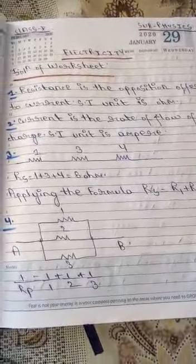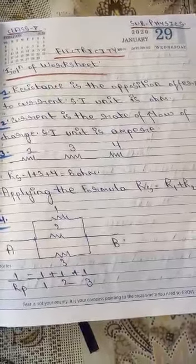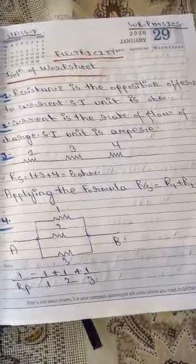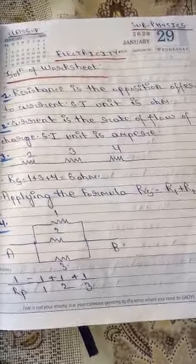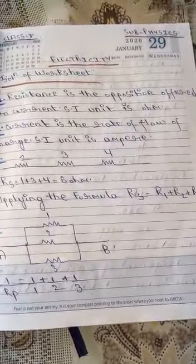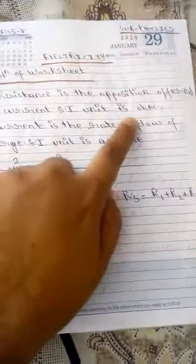As I have earlier given you the worksheet, today I am going to give you the solution of the worksheet where the first question was what is resistance and what is the SI unit of resistance. So resistance is the opposition offered to the current in the circuit and the SI unit of resistance is ohm.